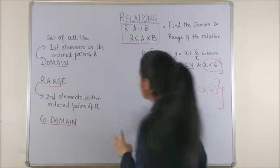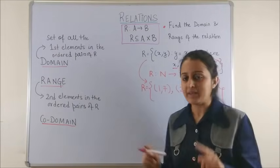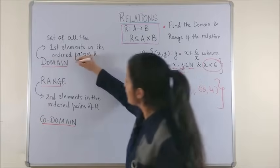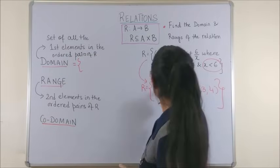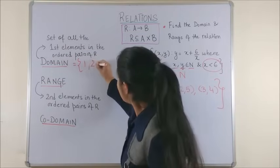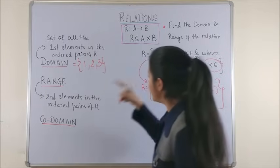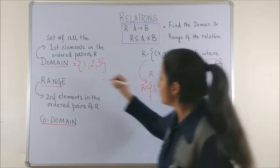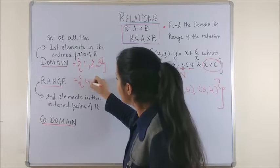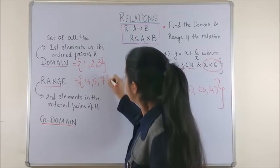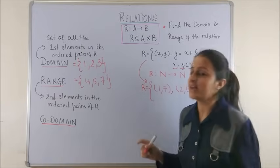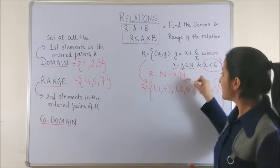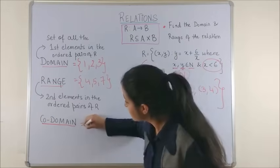So, this time it's very easy to write the domain. Once again, it is a set of all the first elements. So, it becomes 1, 2 and 3. The range has to be the set of all the second elements. So, it becomes 7, 5 and 4. You can write it in any order. And, codomain if it was asked happens to be your second set completely which is N. This is the required answer.